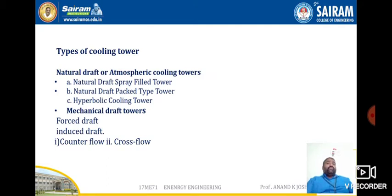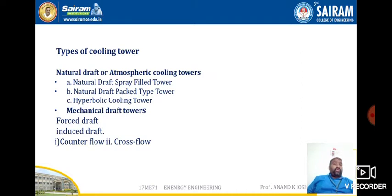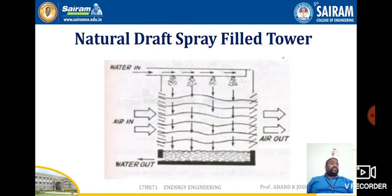There are different types of cooling towers. One is natural draft or atmospheric cooling towers, and the other is mechanical draft towers. Natural draft cooling towers are further divided into three types: natural draft spray type, natural draft packed type, and hyperbolic cooling towers. Mechanical draft towers are categorized into two types: forced draft and induced draft. Induced draft towers are further divided into counter flow and cross flow types.